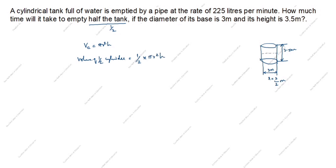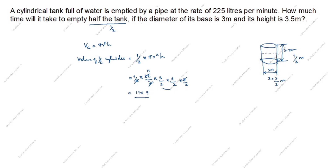So for half the tank, we write: one-half into pi (which is 22 by 7) into r squared. The radius is 3 by 2 meters and height is 7 by 2 (since 7 by 2 equals 3.5). This 7 and 7 cancel, this 2 gives 11. So we get 11 into 3, which gives 99 divided by 8 meter cube.